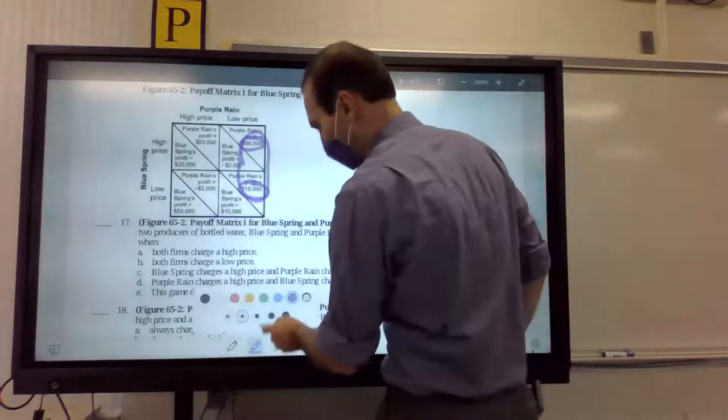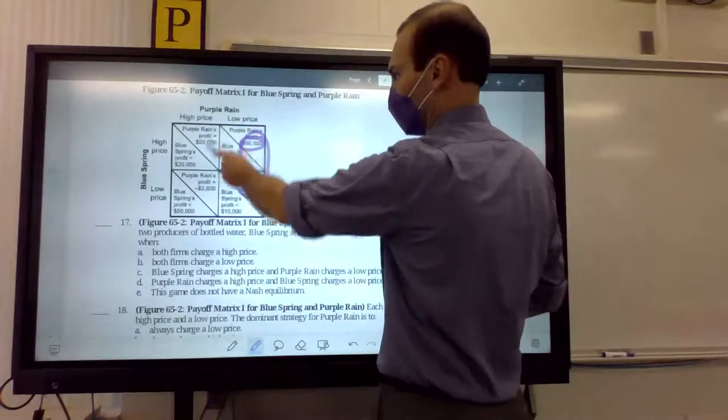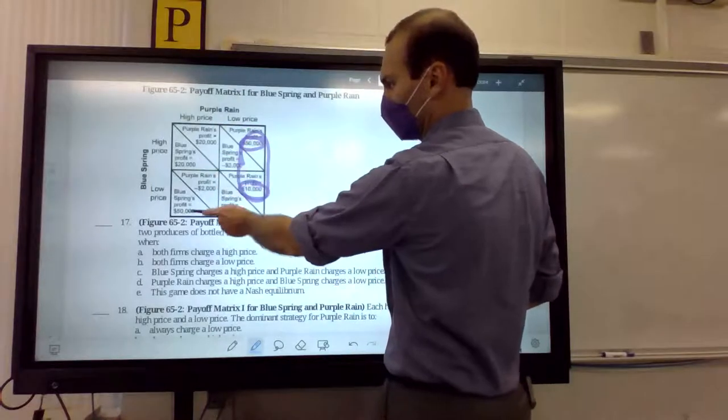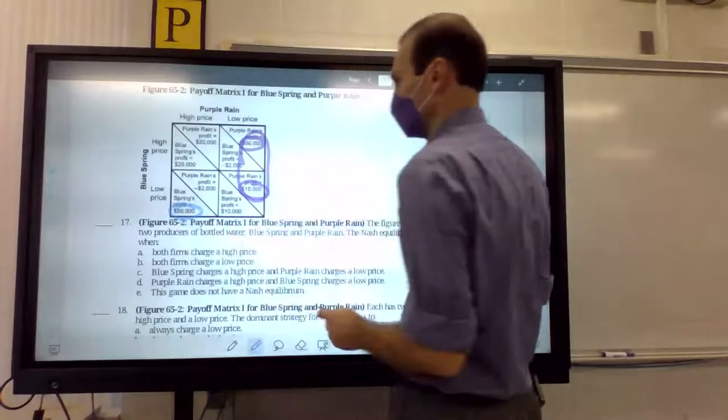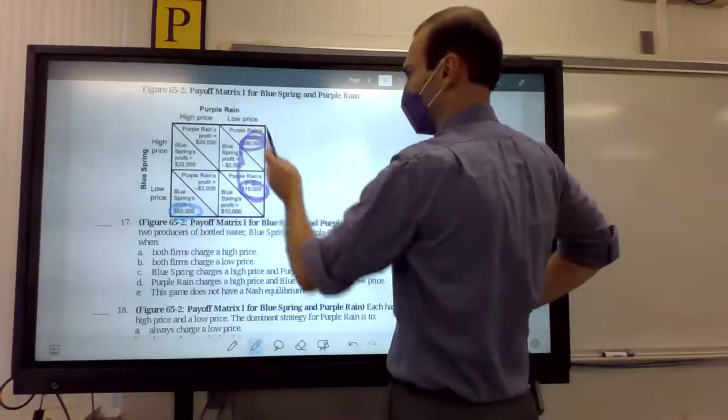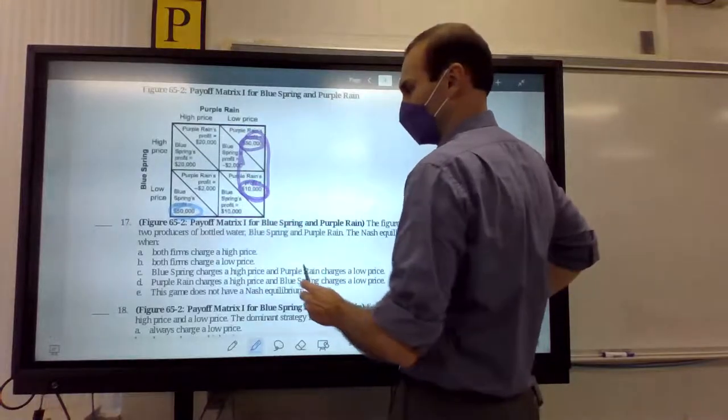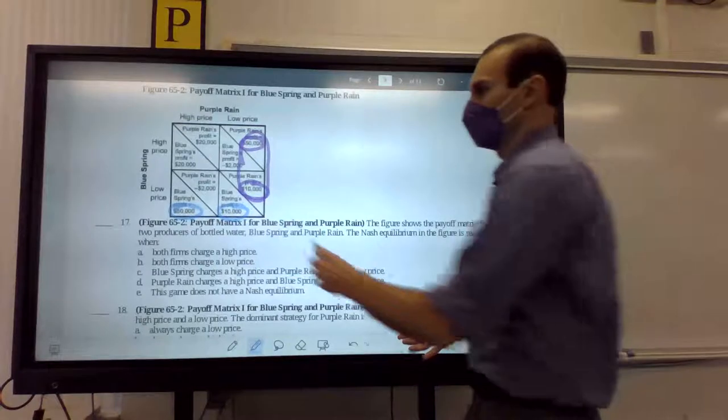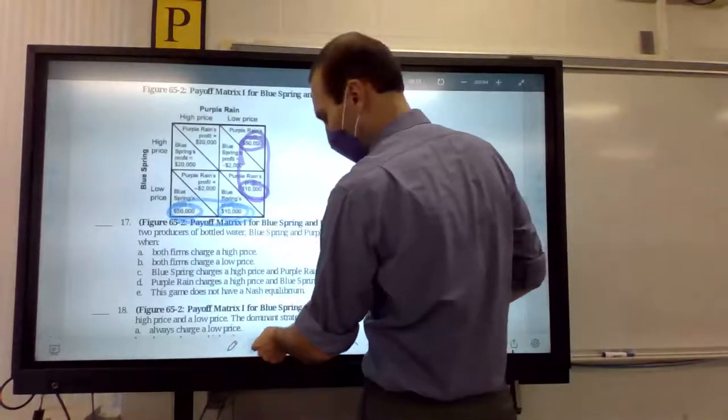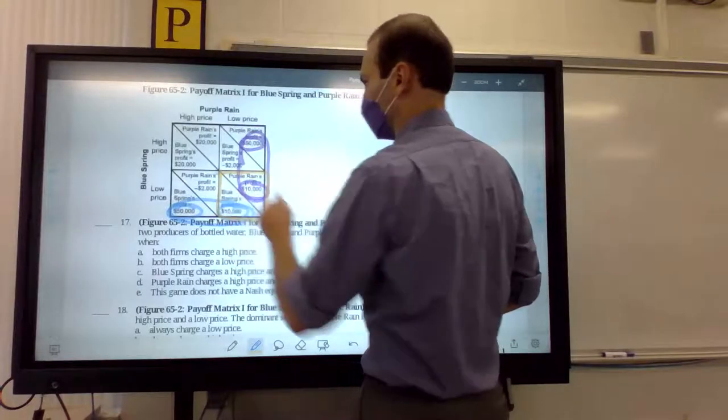On the other hand, we have blue springs. All right? Blue spring, if purple rain is a high price, blue springs, should they make $20,000 profit or $50,000 profit? $50,000. So, they should have a low price. And, if purple rain has a low price, should blue springs have negative $2,000 or $10,000 profit? Do they have a dominant strategy? Blue springs does. So, we end up with our Nash equilibrium being right here.